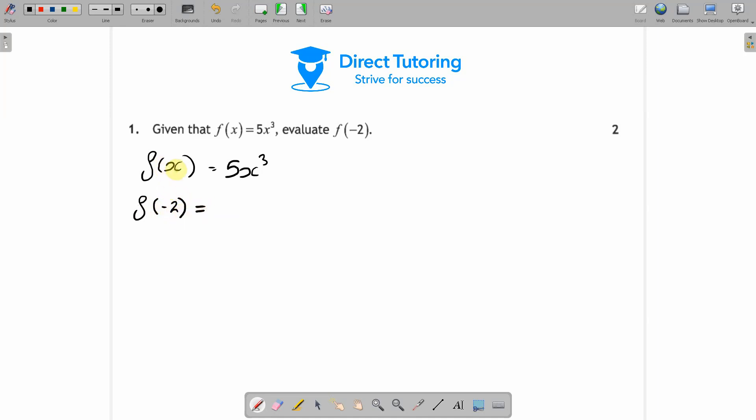Wherever we have an x on the left hand side is the exact same value as an x on the right hand side. So we've replaced this x with minus 2, which means in this equation we have to replace the x with minus 2. So we'll get 5 times minus 2 cubed.